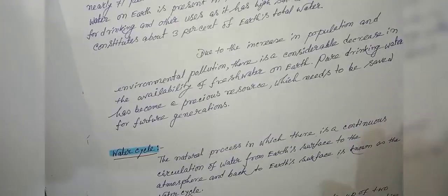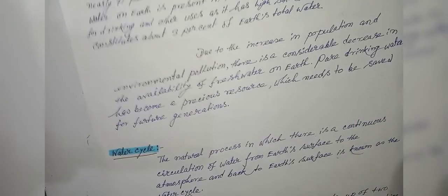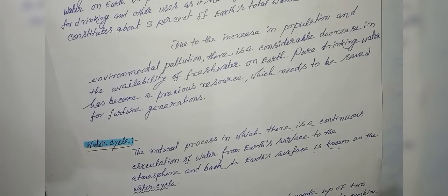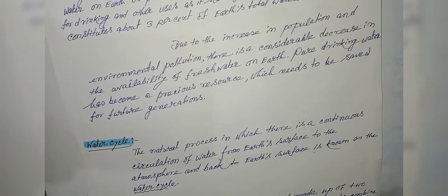Water cycle. The water cycle means the natural process in which there is a continuous circulation of water from Earth's surface to the atmosphere and back to Earth's surface.